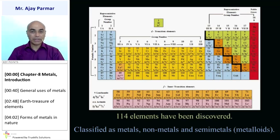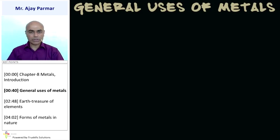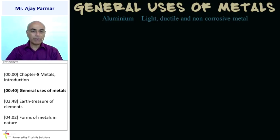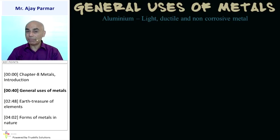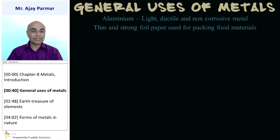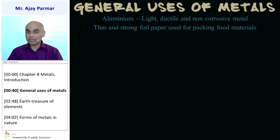In this chapter we shall be studying in a little more detail about metallic elements. What are the general uses of metals, and why do we need to study them? Because we use metals and their compounds on a very large scale. For example, aluminium is a very light, ductile, and non-corrosive metal — it is light by weight, ductile meaning we can make wires from it, and it doesn't corrode. Because of that, we use aluminium for making thin strong foil paper for packaging food material and medicines. It is also used in making cold drink tins.